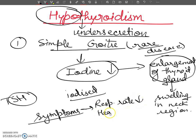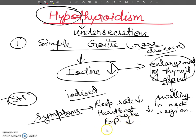In hypothyroidism, the rate of heartbeat is reduced, and the individual feels cold, tired, and sluggish. Blood pressure is lower than normal, the basal metabolic rate is also decreased by 20–30%, and the condition arrests both physical and mental development.